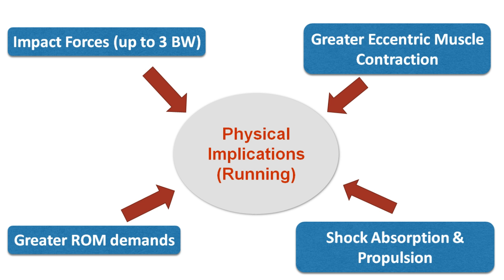What are the physical demands and implications on running? The impact forces can be huge — around 2.5 to 3 times body weight, especially on the foot and ankle. The muscles have to work harder with more eccentric contraction, and the range of motion also increases, especially in joints like the hip and the ankle. The body has to do two key jobs: shock absorption and using energy and muscle contraction for propulsion. The demands on the body are higher and therefore the injury rate is also higher.